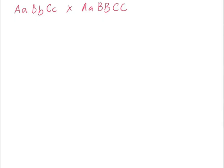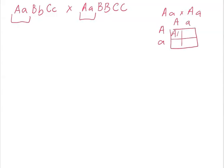We want to approach this individually, looking at each trait one at a time. The first parent offers big A, little a, and the other parent also offers big A, little a. If we do a mini Punnett square — a monohybrid cross — we see that big A little a crossed with big A little a gives us: 25% big A big A, 50% big A little a, and 25% little a little a.